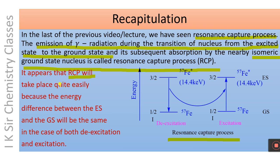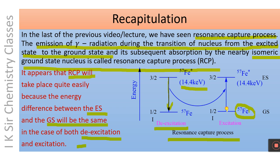As discussed in the previous video, it appears that the resonance capture process will take place quite easily, because the energy difference between the excited state and ground state will be the same in both de-excitation and excitation. In de-excitation, the nucleus transitions from a higher energy level to a lower energy level, emitting energy equal to 14.4 keV. In excitation, the ground state nucleus absorbs energy to transition to the excited state.